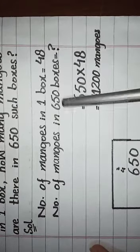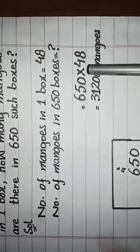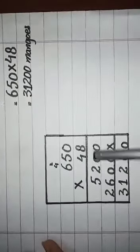For this we will multiply 650 by 48. 650 multiplied by 48. So how to multiply? First of all you will write in vertical form, 650 multiplied by 48.